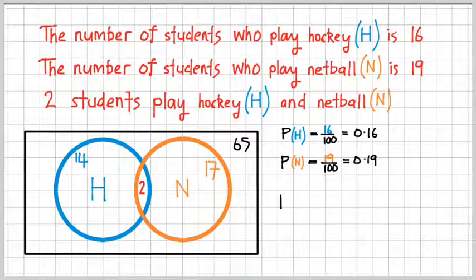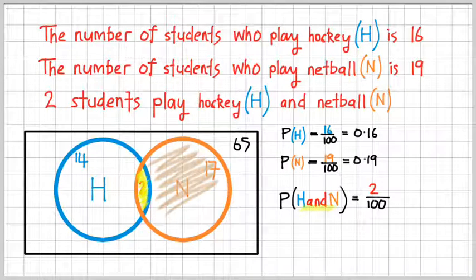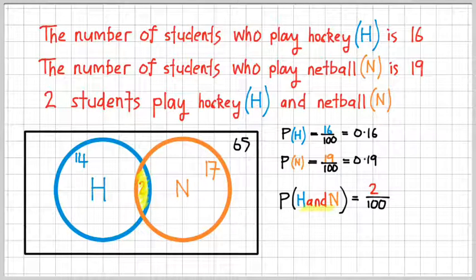What we are going to do, though, is calculate the probability of this scenario here. A student playing both hockey and netball. Now that should be immediately obvious to you. 2 divided by all possible outcomes, 100. 100 students. Okay. There we go. I've skipped one too far there.